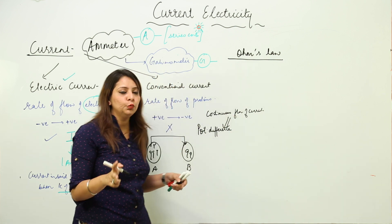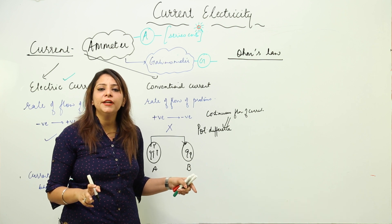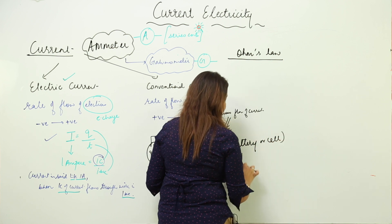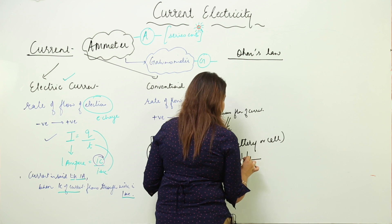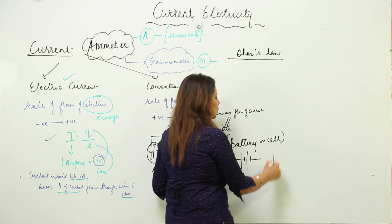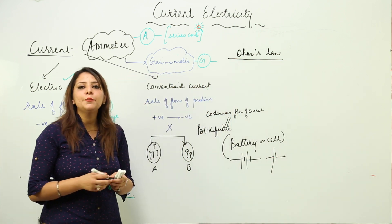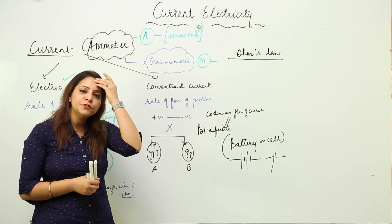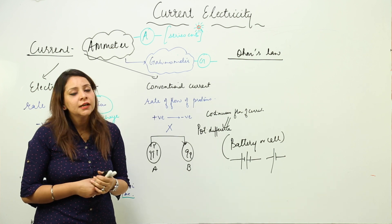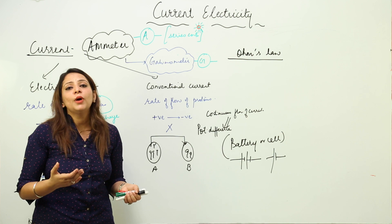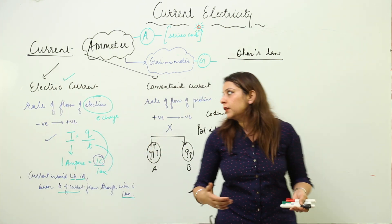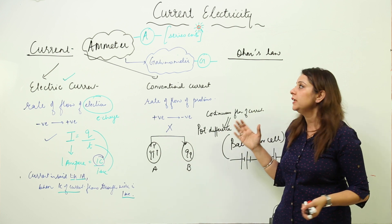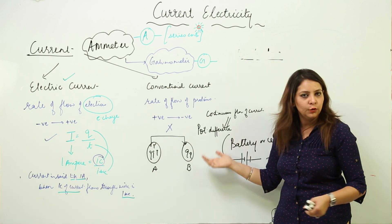For a continuous flow of current, we need a potential difference between two points. We create a permanent potential difference by introducing a battery or cell in the circuit. A battery has two terminals — one at high potential and one at low potential — and they will never be at the same potential. So introducing a battery confirms continuous current flow. We will be taking up Ohm's law in the next slide.